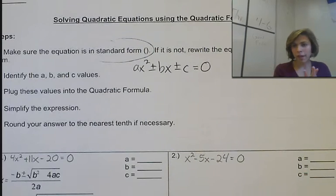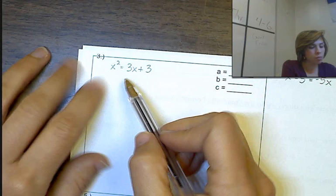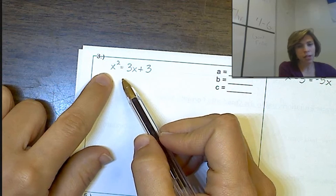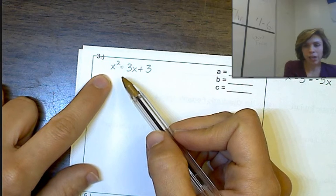So with that in mind, we're going to go to number 3, and you're going to solve it. Well, I'm going to step you through it. So number 3, we got x squared minus 3x plus 3. Now this is not in standard form, so we have to change it to standard form.